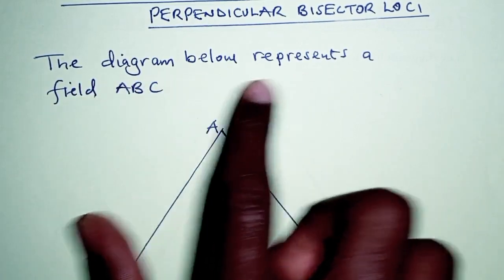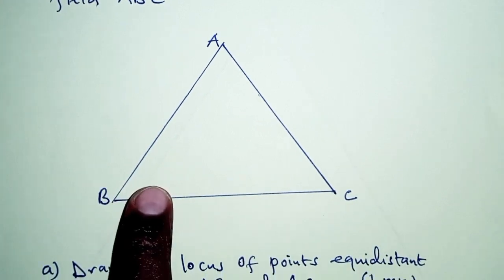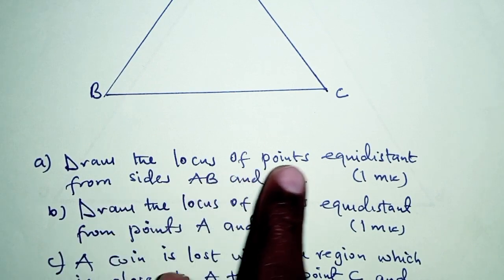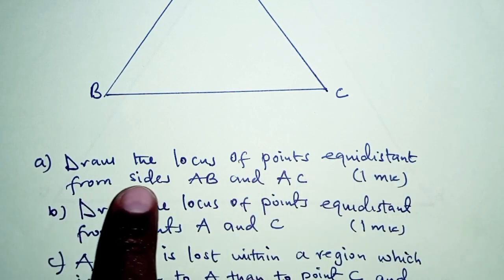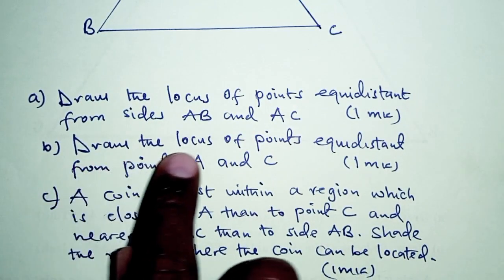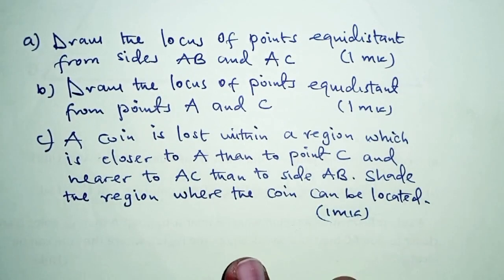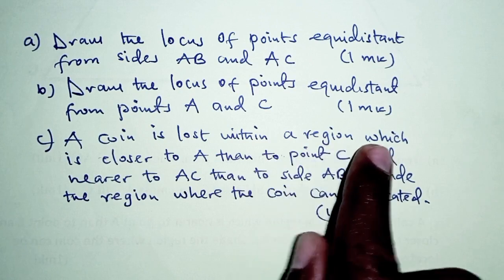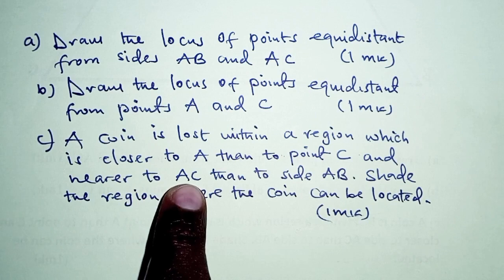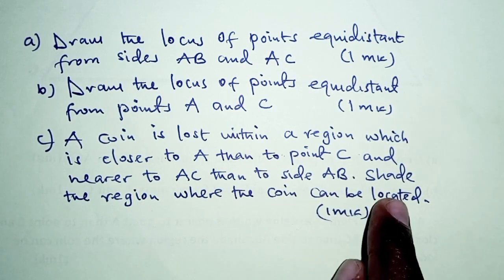The diagram below represents a field ABC. We have the diagram as shown — it's a triangle. Part A: draw the locus of points equidistant from sides AB and AC. Part B: draw the locus of points equidistant from points A and C. Part C: a coin is lost within a region which is closer to A than to point C and nearer to AC than to side AB. Shade the region where the coin can be located.